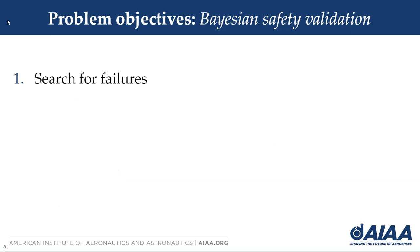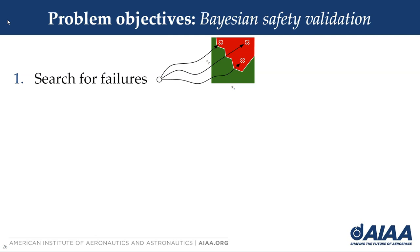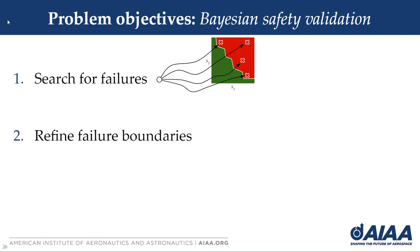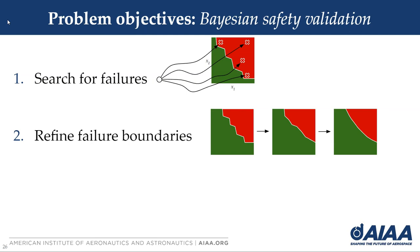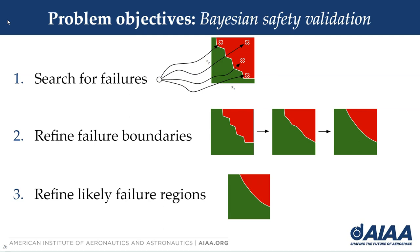First, we want to search for failures and reduce uncertainty by covering the design space. Given some design space x1 and x2, we want to find points that lead to failures and fit the surrogate to these individual points. The second objective is to refine the failure boundaries — we want to select points on the boundary so that we can iteratively refine it closer to truth. And lastly, we want to refine the likely failure regions. If we have a failure boundary defined over this space and an operational model showing how likely points x1 and x2 would be, we get the joint distribution, where the shaded region closer to the center is the likely failure region, and we want to sample there to produce high-likelihood failures.